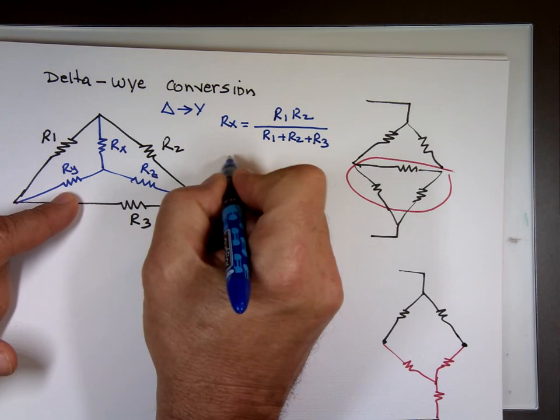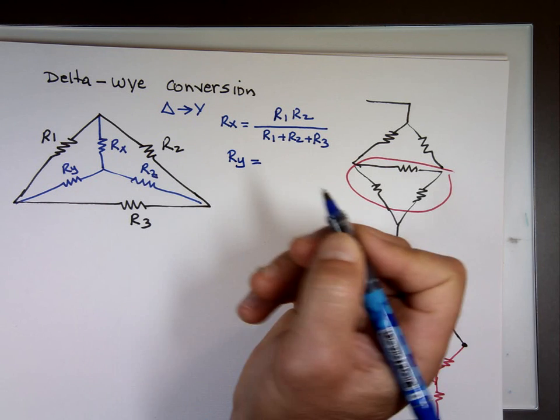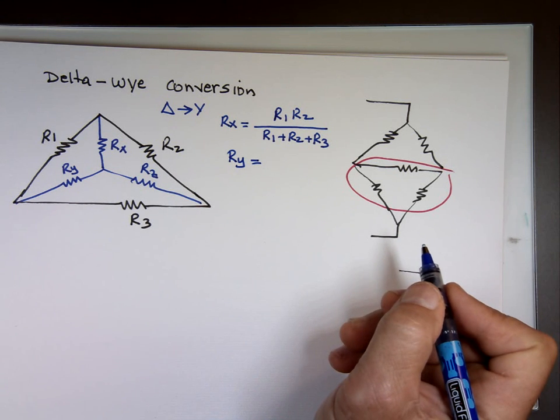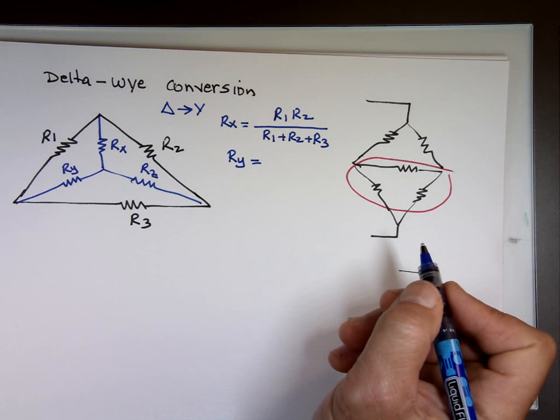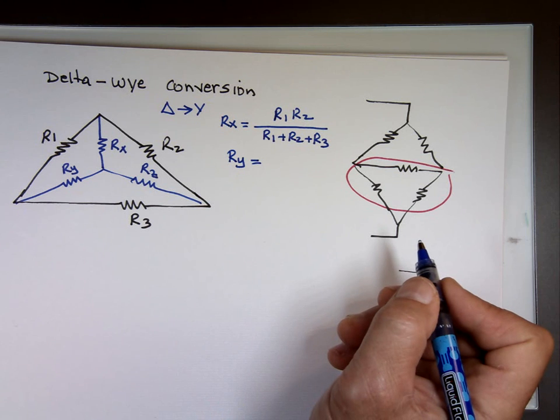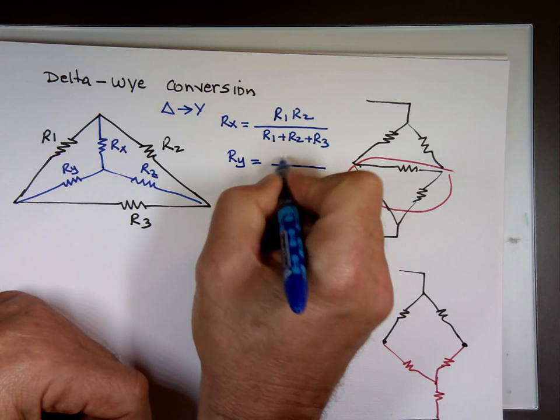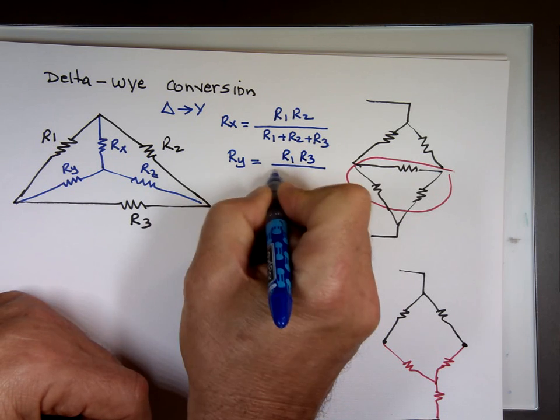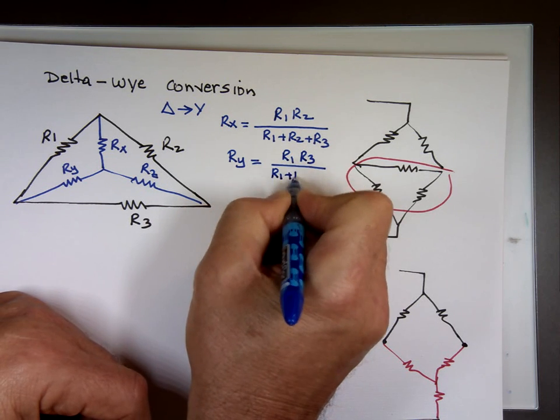R sub Y. In my picture R sub Y is squeezed between which values? What are the resistors around R sub Y? 1, 3. So the top will be 1 and 3. The bottom is still going to be the same. The sum of all three.